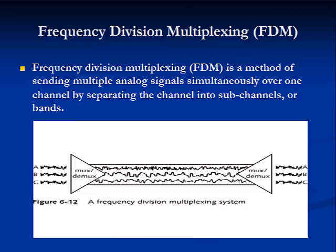Frequency division multiplexing, or FDM, is a method of sending multiple analog signals simultaneously over one channel by separating the channels into subchannels or bands. The carrier signal for each band is then modulated by an information signal, just like FM. A guard band — a narrow range of unused frequency between each band's frequency range — ensures that signals do not interfere with each other. FDM is an older, inefficient analog method of multiplexing, and its use in modern networks is limited today.